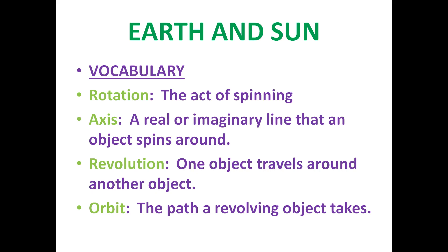Revolution is when one object travels around another object — here it refers to the earth's revolution around the sun. Orbit is the path a revolving object takes; specifically, the path the earth takes while revolving around the sun.